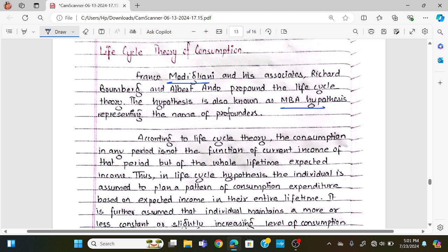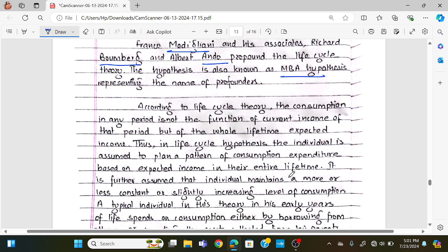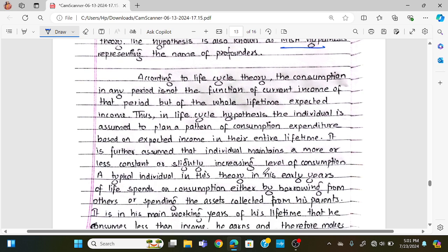This is the theory of Modigliani and Brumberg. According to the life cycle theory, the consumption of an individual does not depend on the current income of that period alone. The individual is assumed to plan a pattern of consumption expenditure based on expected income in their entire lifetime. It is further assumed that individuals maintain a more or less constant or slightly increasing level of consumption.